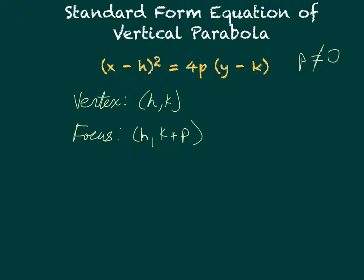The directrix line is y = k-p. And finally, our axis of symmetry is the line x = h.